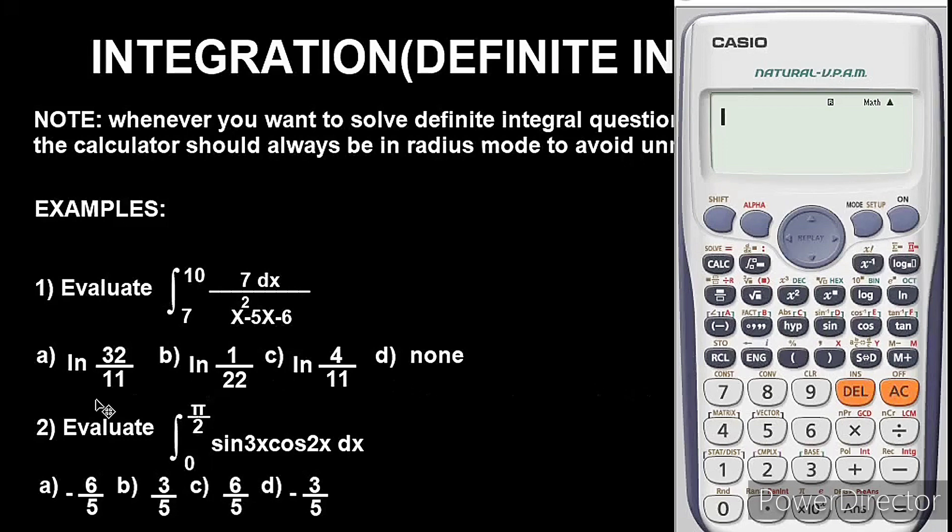Let's show one more example. This is example two. Example two says evaluate the integral from 0 to π/2 of sin 3x cos 2x dx. So to start with you bring out the integral symbol and input the upper and lower limits. Upper limit there is in fraction π over 2, so to make π you press shift, π is here this button, over 2.